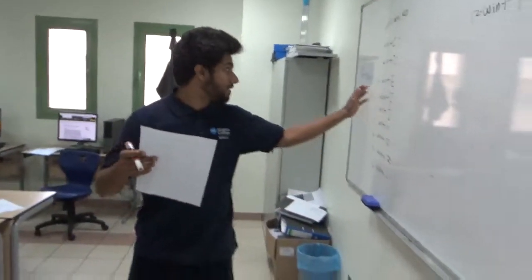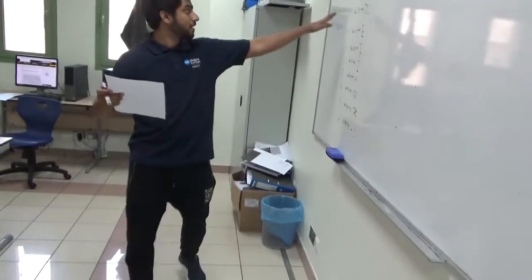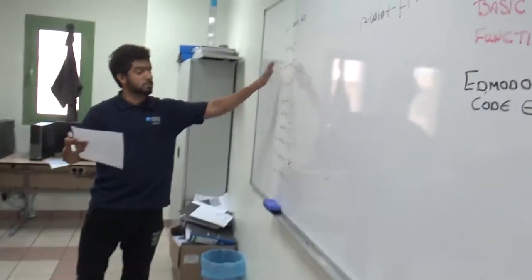Next key: Windows plus D. This is to show and hide the desktop.